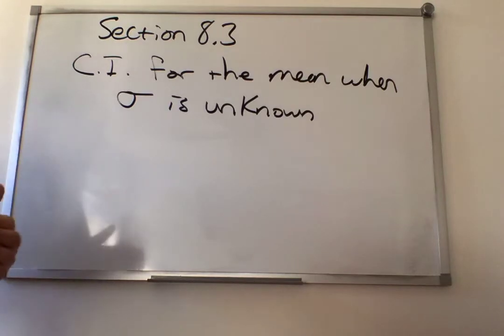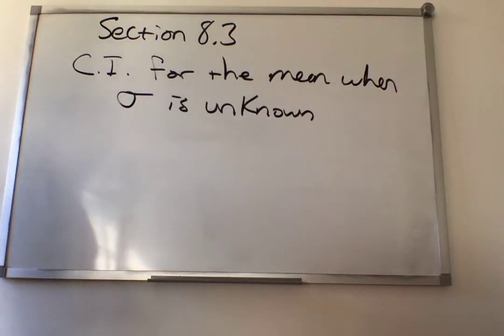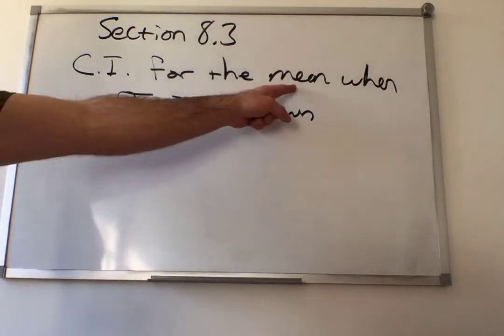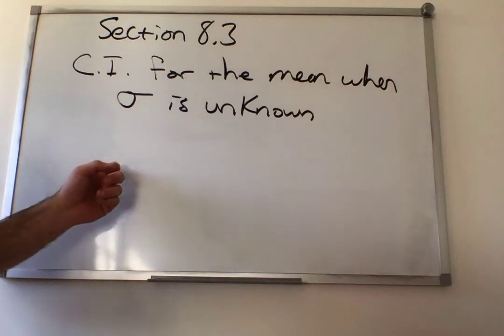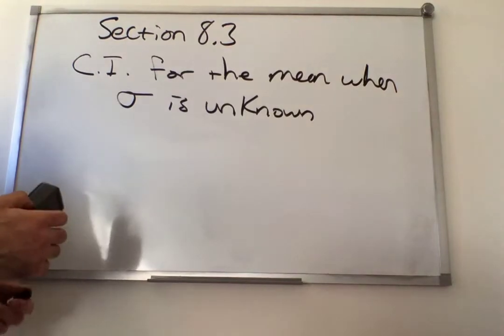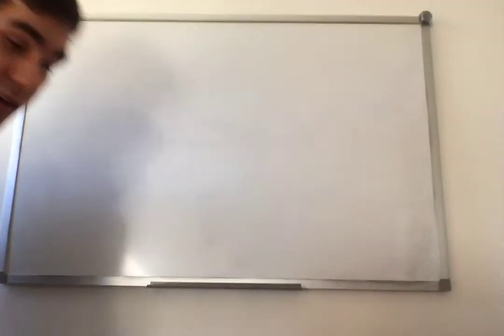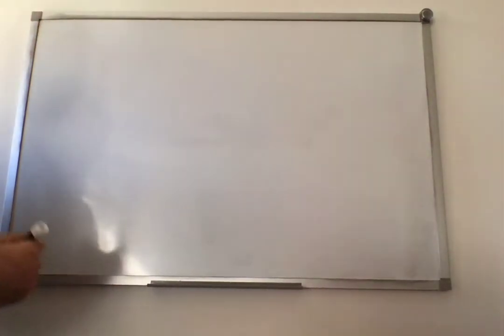The work is going to seem very much alike, but how we calculate the critical values will differ because we're going to be using a different distribution since we don't know our population standard deviation. We're still constructing confidence intervals for the mean, still using our x-bar. Now, why are we going to use a different distribution when sigma is unknown? The book does give the name of the person who came up with the distribution — it's called the Student's t-distribution.